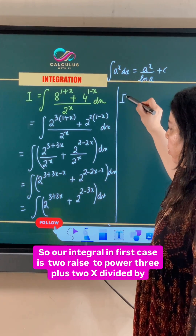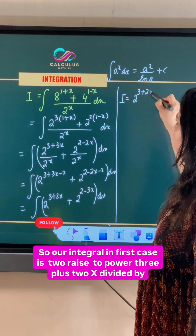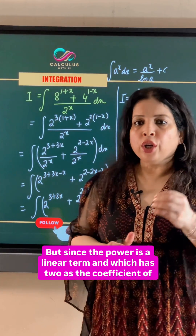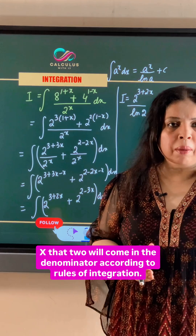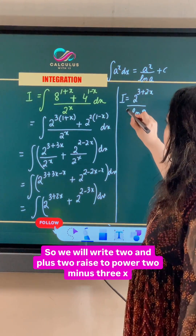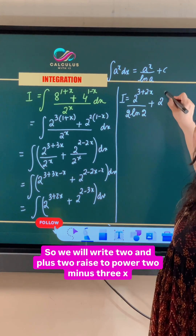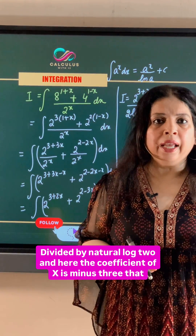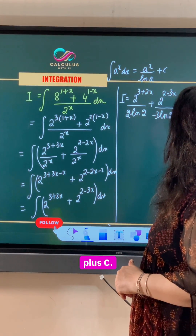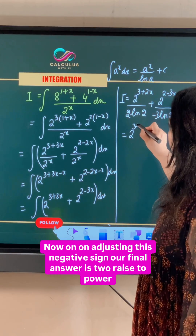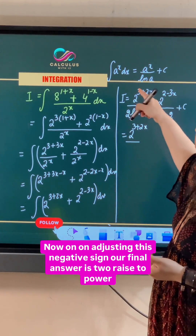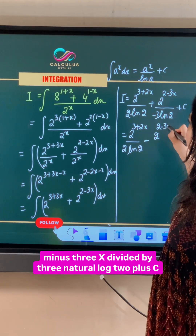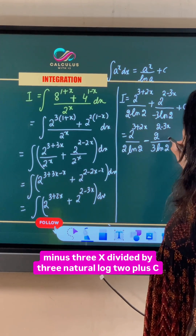Our integral for the first term is 2 raised to power 3 plus 2x, divided by natural log 2. But since the power is a linear term with coefficient 2 for x, that 2 will come in the denominator according to the rules of integration. Similarly, for the second term, 2 raised to power 2 minus 3x, divided by natural log 2, and since the coefficient of x is minus 3, that comes in the denominator as well, plus C. Adjusting the negative sign, our final answer is 2 raised to power 3 plus 2x, divided by 2 natural log 2, minus 2 raised to power 2 minus 3x, divided by 3 natural log 2, plus C.